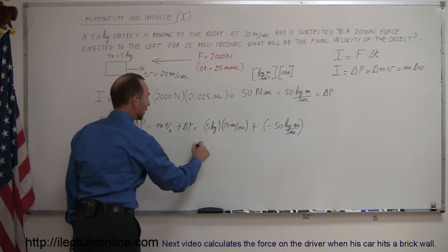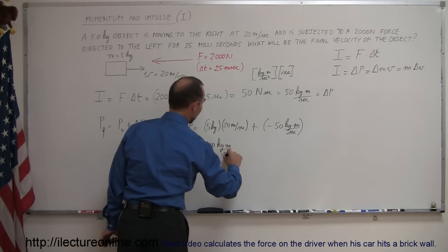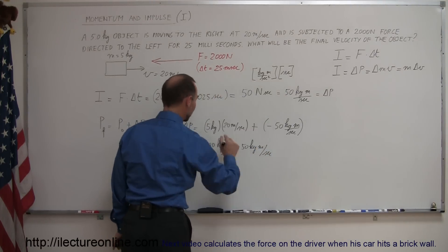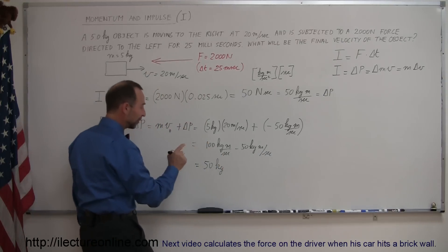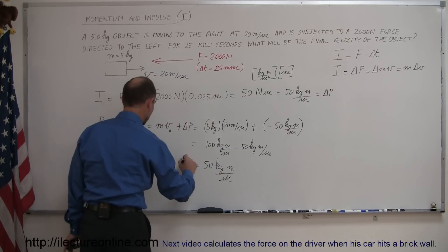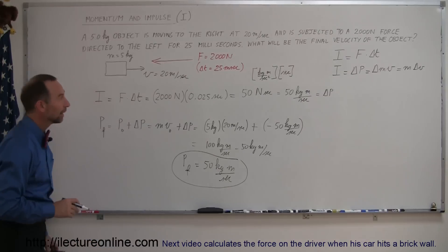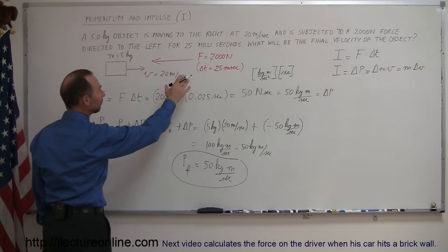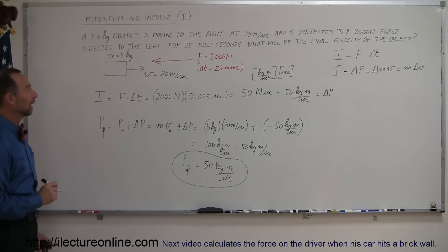So 5 times 20 is 100 kilogram meters per second, and then we subtract from that 50 kilogram meters per second, which is the change in momentum caused by the impulse. The net result is that the object will still have a positive — directed to the right — momentum of 50 kilogram meters per second. That would be p-final. So there was a force imparting a change in momentum onto the object, but it wasn't big enough — it only took care of half the momentum, and so it will continue to the right with half of its original momentum.